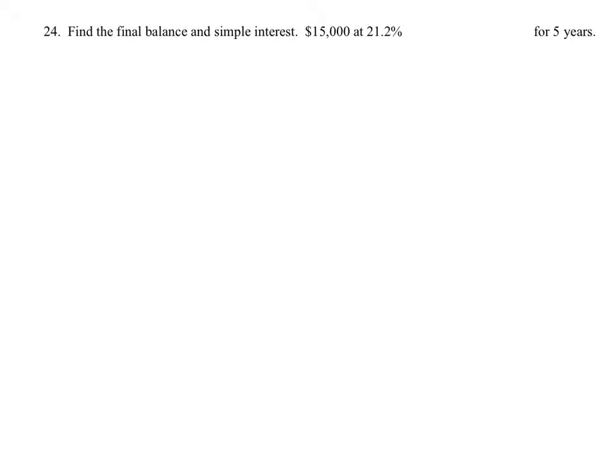All right, the worksheet on this one said that it was compounded quarterly, but we didn't cover that in this unit. So we're just going to find the balance in simple interest based on these three numbers it gives us: $15,000 at 21.2% for five years.